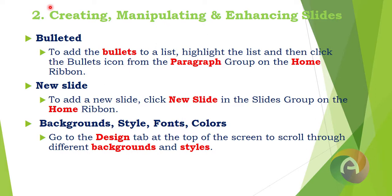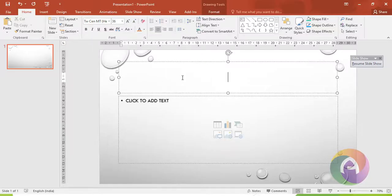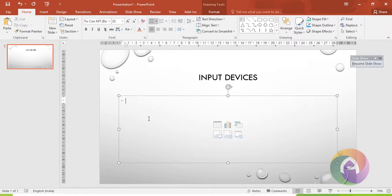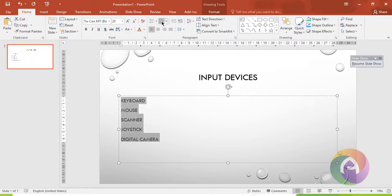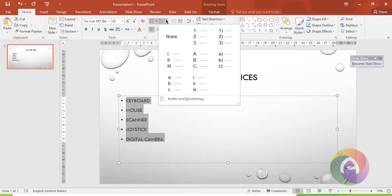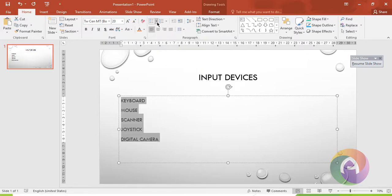Next, select Bulleted list. To add bullets to the list, highlight the list content, then click the Bullets icon from the Paragraph group on the Home ribbon. You can click the bullets icon from the text box to apply bullets. For example, type a heading like 'Input Devices' and select the text, then click the Bullets icon — the text will appear as a bullet list. If you want numbered bullets, you can use the numbered bullets format instead.